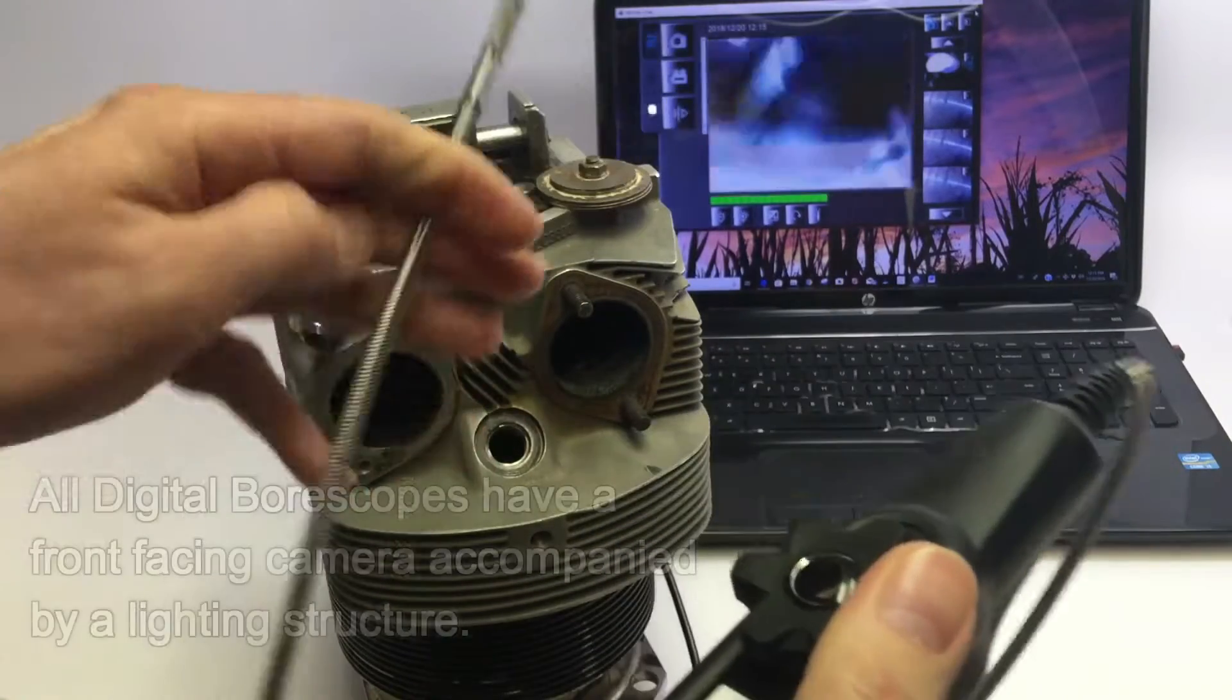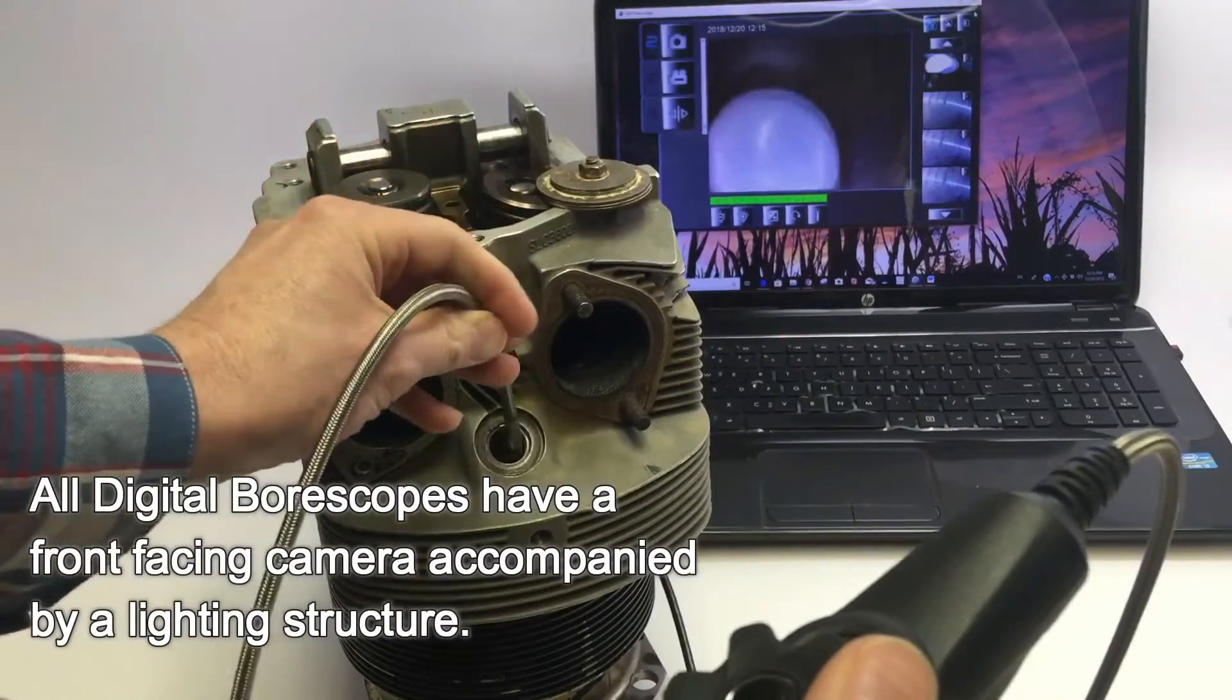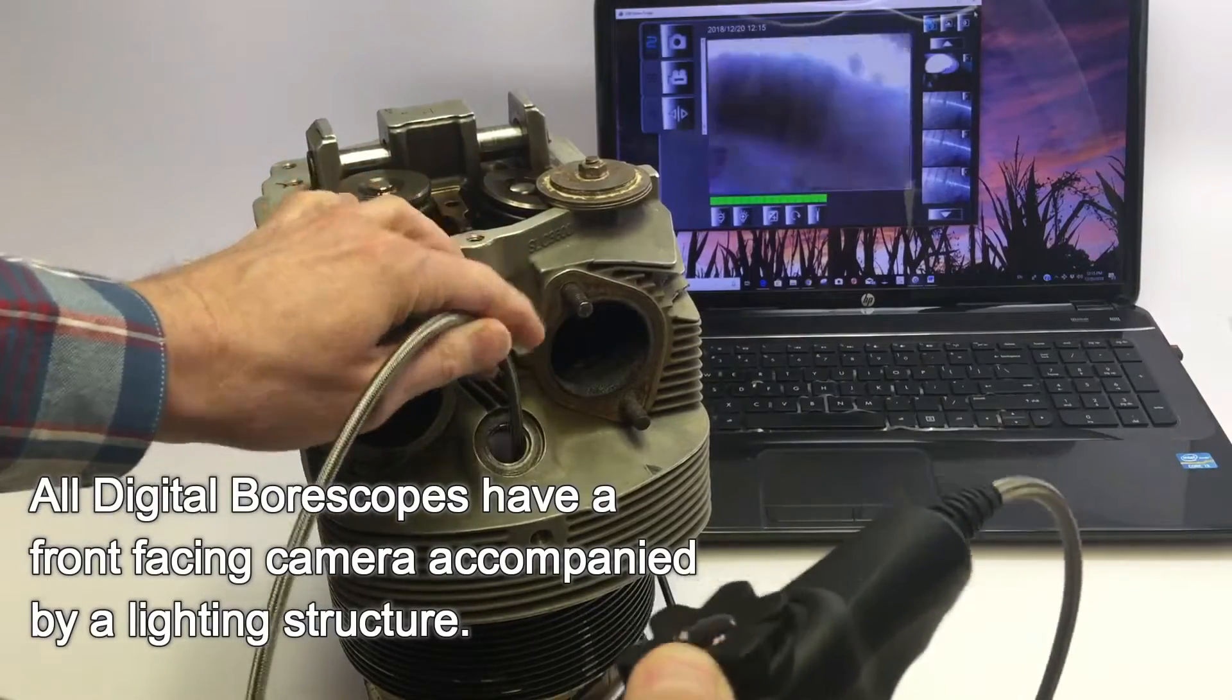By standard design, digital boroscopes have a front-facing camera accompanied by a lighting structure for viewing within enclosures.